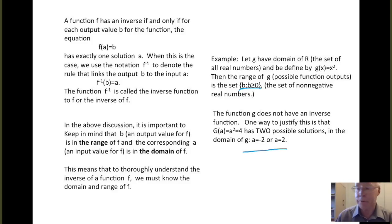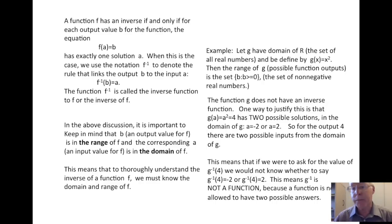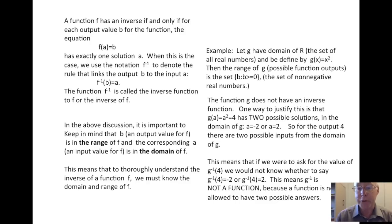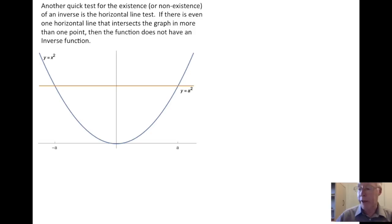For the output four, there are two possible inputs from the domain of g: minus two and two. In general, we don't want this to happen. If we were to ask for g inverse of four, we would not know whether to say g inverse of four is minus two or g inverse of four is two. So g inverse is not a function, because a function is not allowed to have two possible answers — there must be one and only one answer. Another quick test is the horizontal line test: if even one horizontal line intersects the graph at more than one point, the function does not have an inverse.